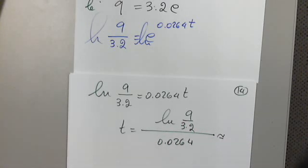And let's approximate. In the graphing calculator, top and bottom, we don't need parentheses. But we need parentheses to divide the log, inside the log. So, natural log, left parentheses already popping up, 9 divided by 3.2. Close the parentheses and divide by 0.0264. So, this means 39 years.